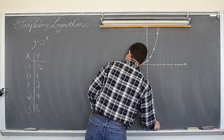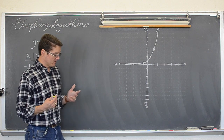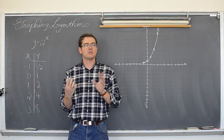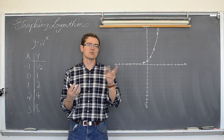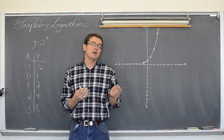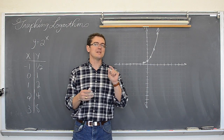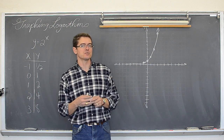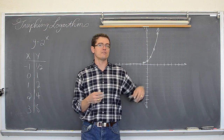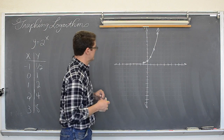Now, you heard me talk in the last video about intro to logarithms — that logarithms and exponential functions are sort of the reverse of each other. Log base ten of a hundred is equal to two, and ten squared will undo that log function and get you back to a hundred. So they are inverse functions of each other.